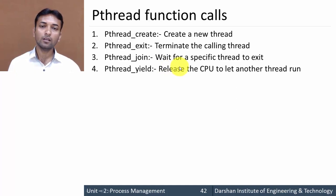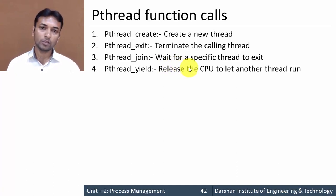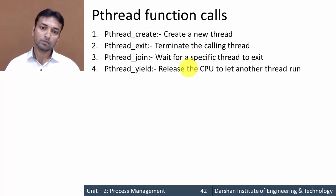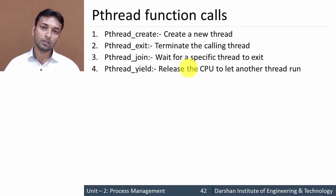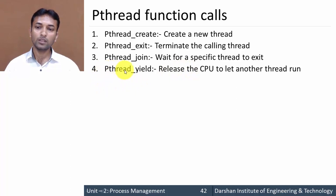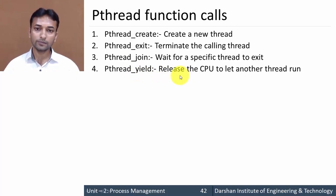The fourth system call is pthread_yield. This system call is used to release the CPU to let another thread run. Sometimes a running thread decides it needs to release the CPU; in such cases it calls pthread_yield so that the CPU can be allocated to another thread.